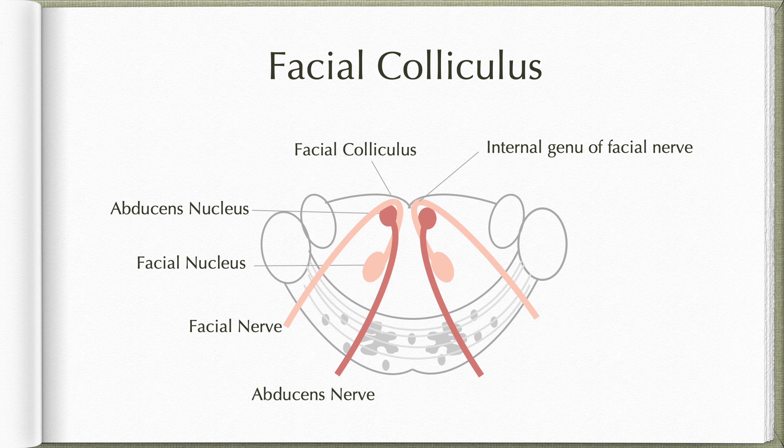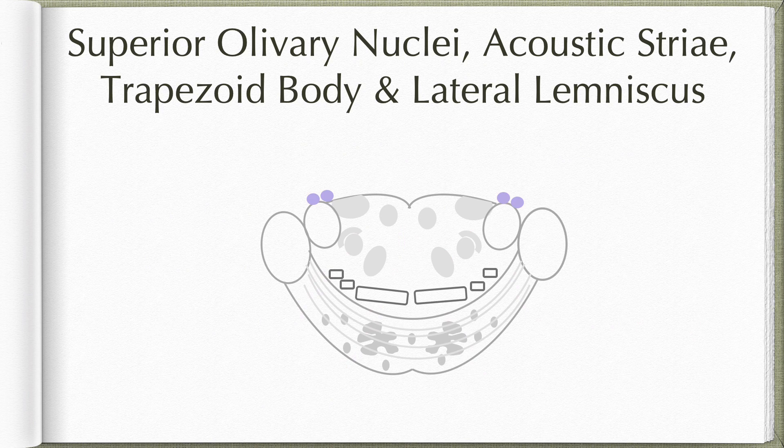This peculiar course is explained on the basis of neurobiotaxis, a phenomenon where motor neurons migrate towards their sensory source. In this case, the facial nerve nucleus has moved close to the spinal nucleus of the trigeminal nerve. Similar neurobiotaxis was also seen in the medulla in the case of nucleus ambiguus. Coming to the next set of nuclei, these are the superior olivary nuclei.